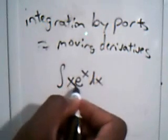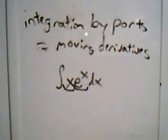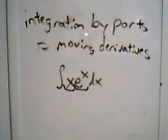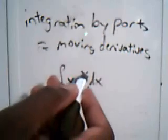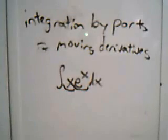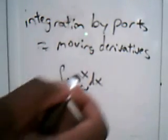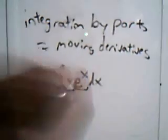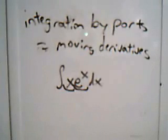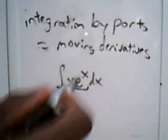First of all, you want to split the integrand into two parts. In this case it's easy because you only have two functions within the integrand. Do we want to take the derivative and move it from x to e to the x? That probably wouldn't be the best idea because when we remove the derivative from here to here, then this derivative of e to the x stays the same. It's probably a smarter idea to move the derivative from here to here.